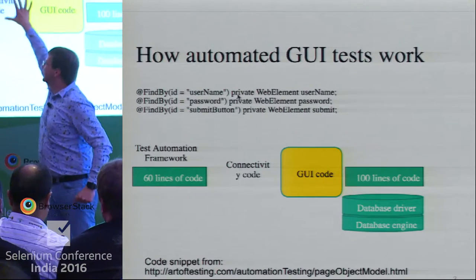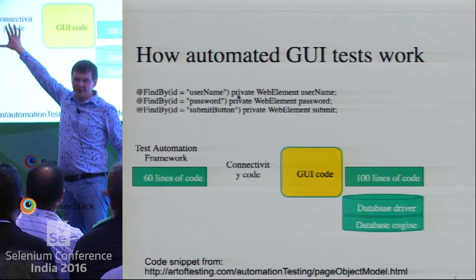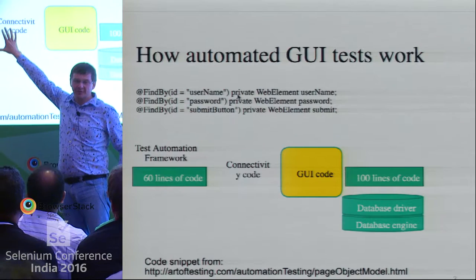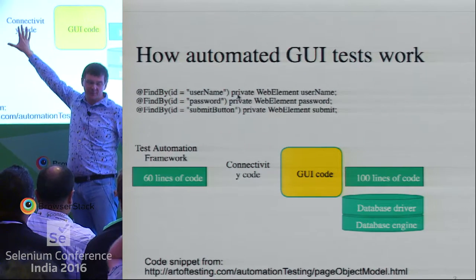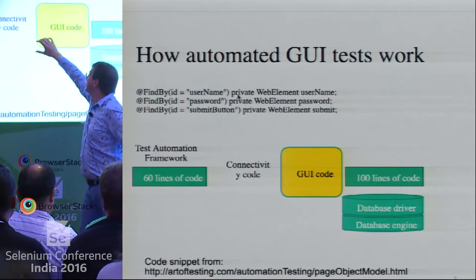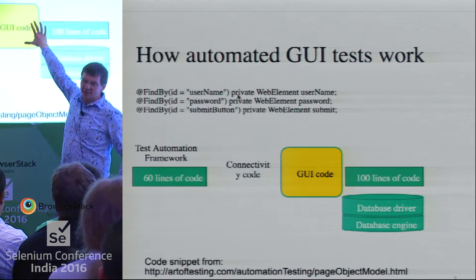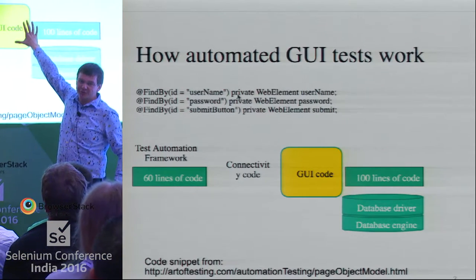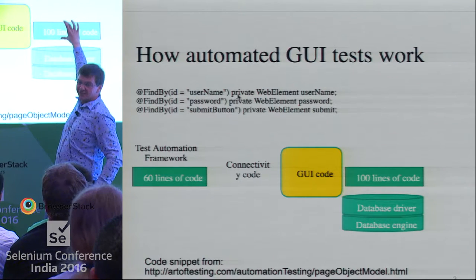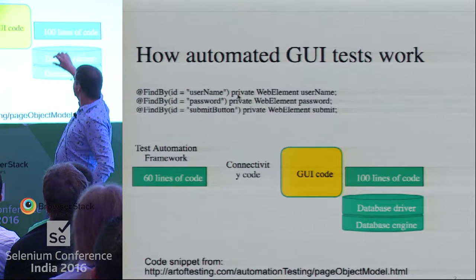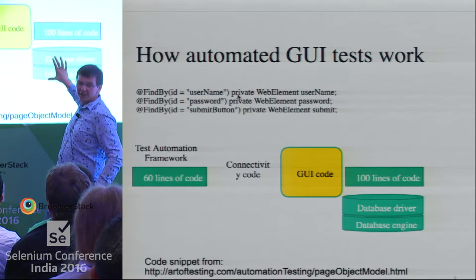In here is a bunch of connectivity code — this is typically millions of lines of code. It's your web browser, it's Selenium WebDriver, it's the networking code, we've got the GUI code which has all the glorious JavaScript and CSS and the rest of it. But ultimately what we're testing is this, and typically there's some sort of database running in the background.